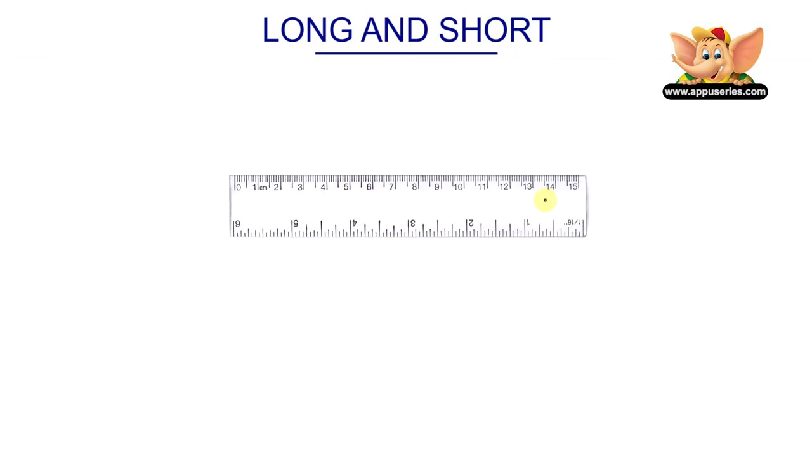If you look over here, they are also numbered from 0 to 15. This means that each division is a centimeter. A centimeter is written as cm. Why don't we try and measure a few objects using this particular scale?